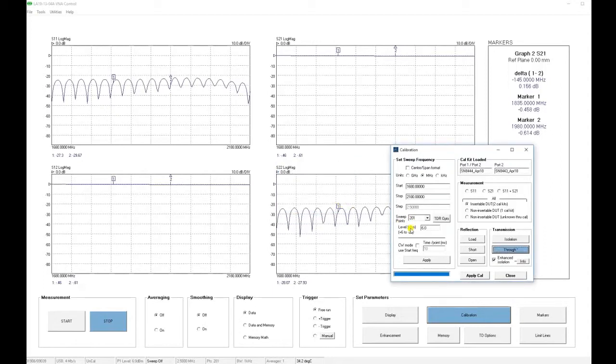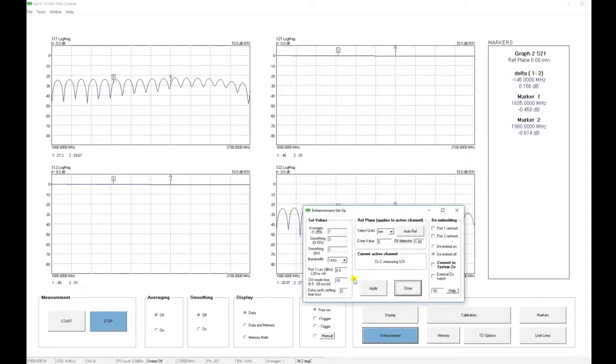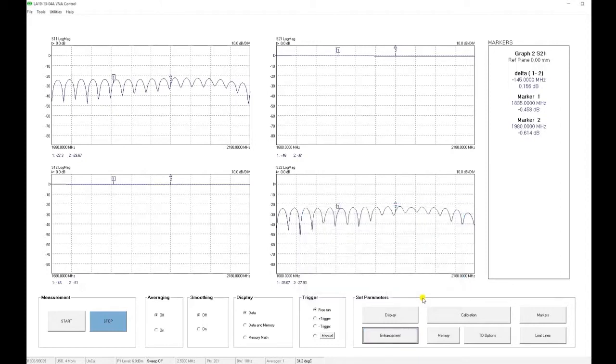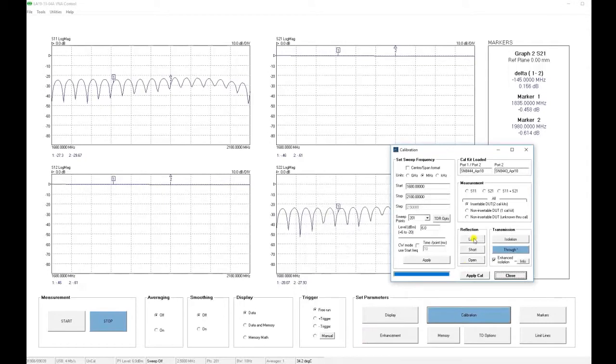Now, the rest of the calibration steps will be reflection measurements, and they need to be done at the lowest possible bandwidth. We close the calibration window just for a second, and set the bandwidth to 10 Hz. Now, we are ready to make the rest of the calibration measurements with a reduced bandwidth of 10 Hz.